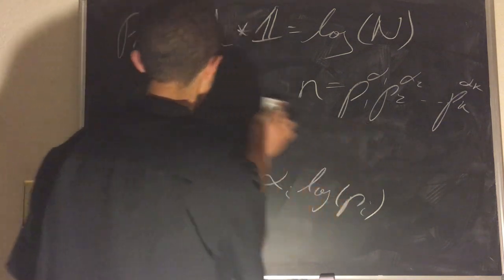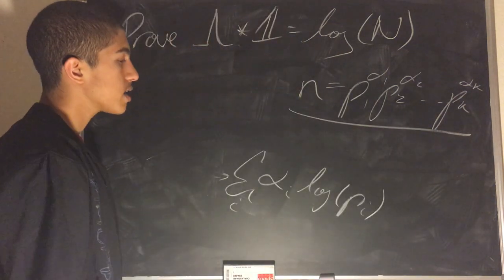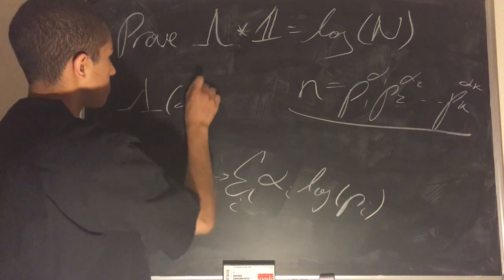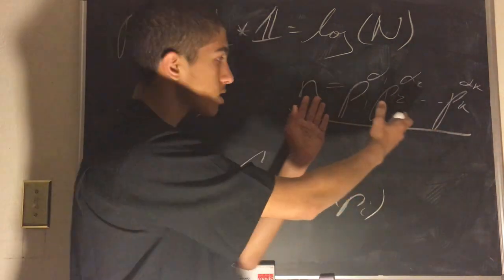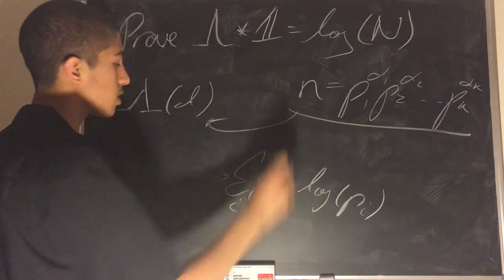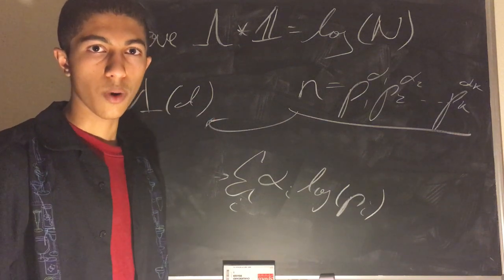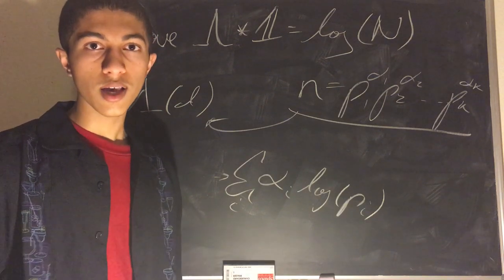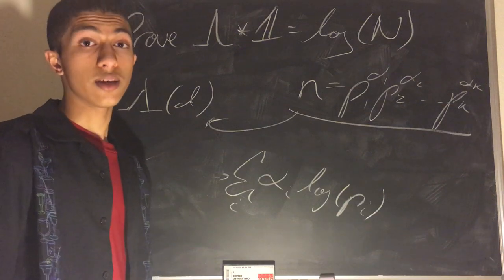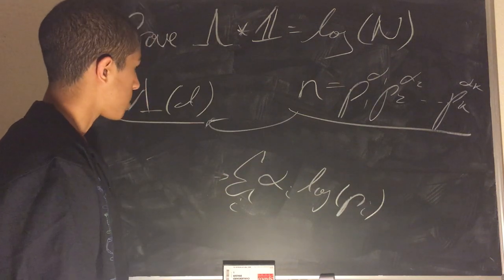We can think about why this makes sense. If N equals this product, and we're trying to evaluate the von Mangoldt function lambda(D), we need to find the prime power divisors of N to plug into this input. Lambda(D) takes only non-zero values when you have prime powers — everywhere else, lambda(D) is defined to be zero, because if D is a product of more than one distinct prime, it equals zero. So lambda(D) takes only non-zero values at prime powers, and we only need to consider the prime powers.